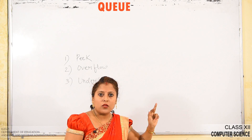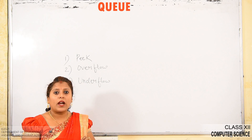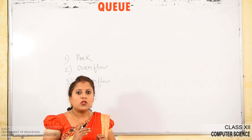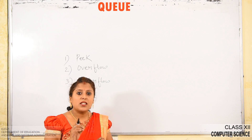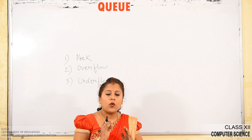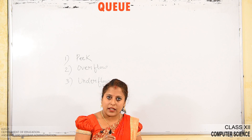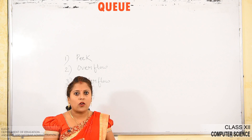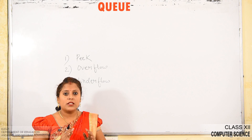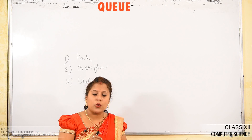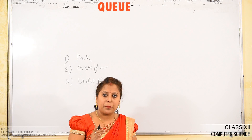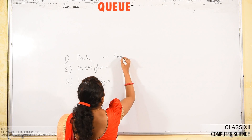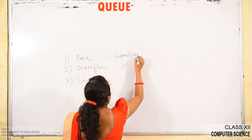Peak operation means inspecting the value at the front end. Since deletion happens from the front end, peak lets you inspect which value is at the front without removing that element. You are not taking out the element from the queue; you are just inspecting the value present at the front end. That is why it is also called inspection.